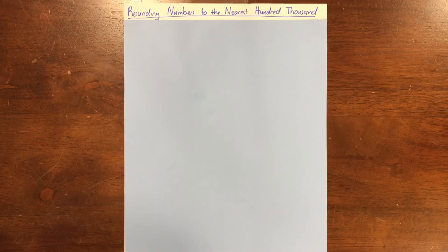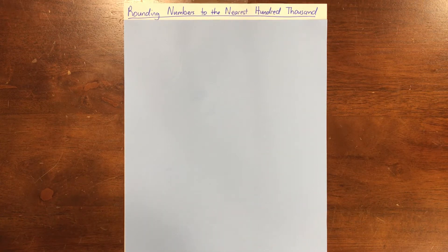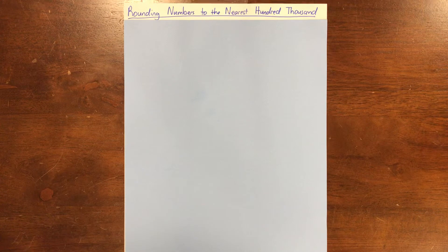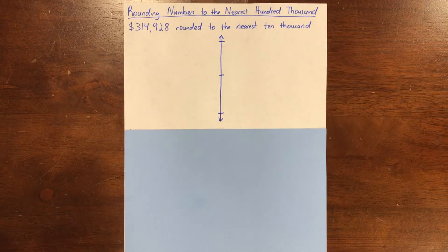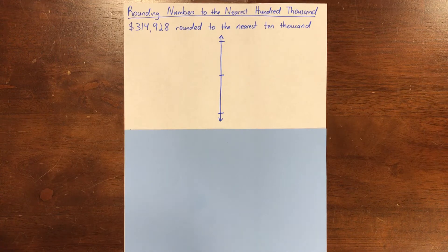There are a lot of ways you could have represented this problem. One way that we talked about yesterday is just using a number line with question marks to show that we realize we're going to round, but we aren't sure what the rounded number is going to be. We're trying to round 314,928 to the nearest 10,000. What will our landmark numbers need to be, and how do you know?